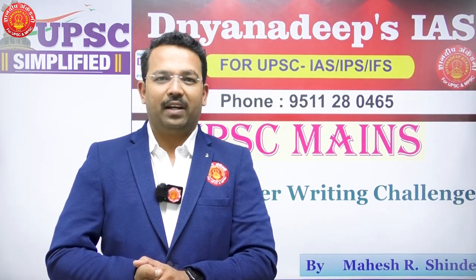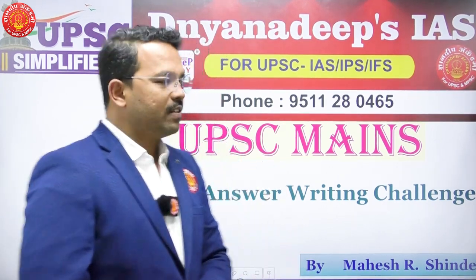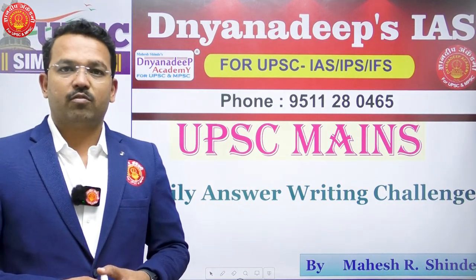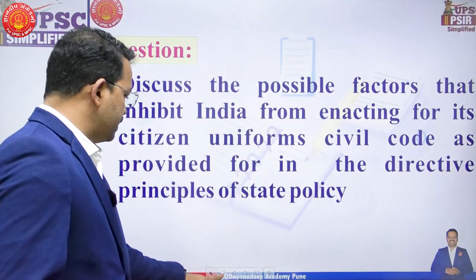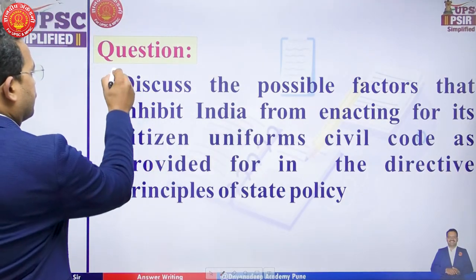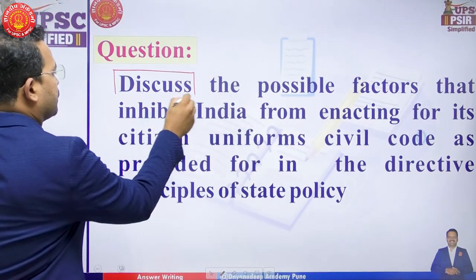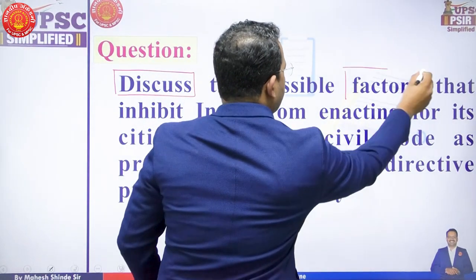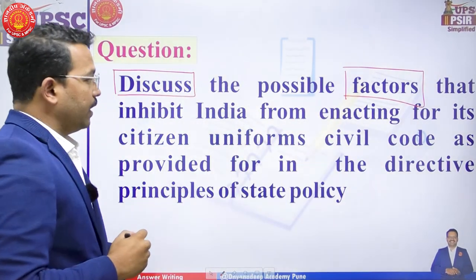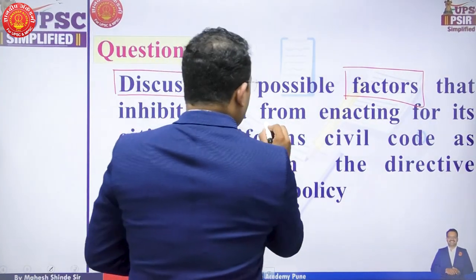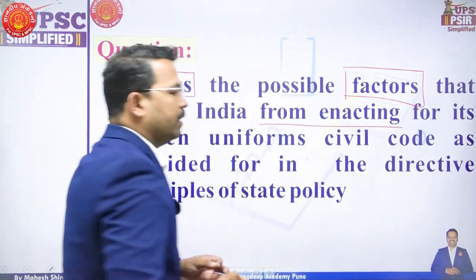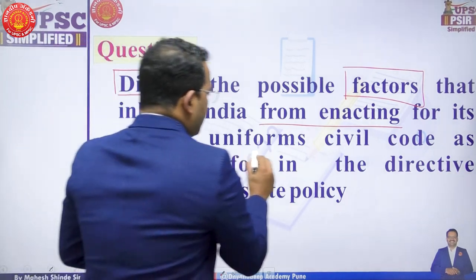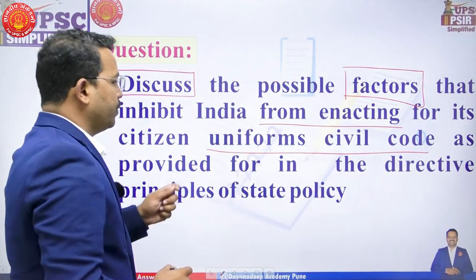Hello friends, welcome to Nandipa Academy and welcome to today's session of daily answer writing where we discuss previous year's questions of UPSC. Today's question is very interesting. They are asking us to discuss the possible factors that inhibit India from enacting a law or legislation for its citizens — the Uniform Civil Code — as provided for in the Directive Principles of State Policy.